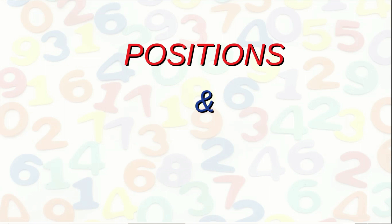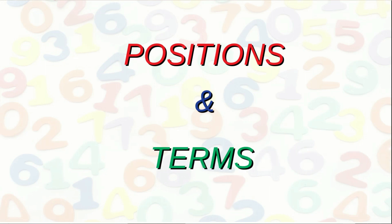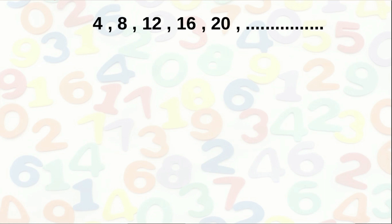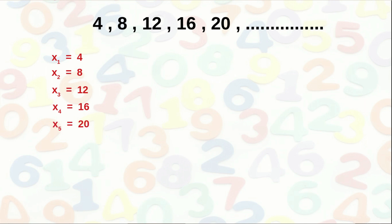Next, we discuss the relationship between positions and terms of a number sequence. Again consider the sequence 4, 8, 12, 16, 20, etc. Here x1=4, x2=8, x3=12, x4=16, x5=20. The terms of the sequence are got by multiplying the positions by the number 4. Therefore the sixth term is 6 × 4 = 24. The relation connecting position and term is: term = position × 4.